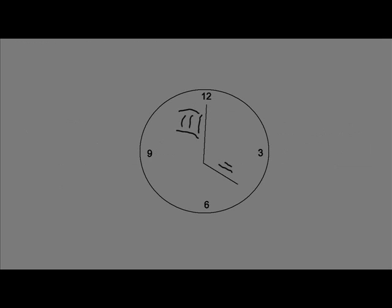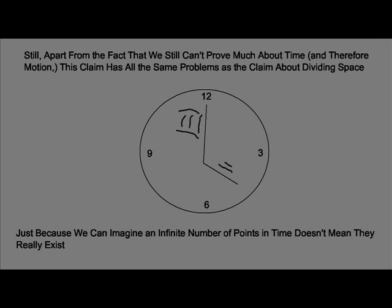Some say that time and motion can have infinite points following from each other, but apart from the fact that there's still relatively little that can be proven about time, and therefore motion in this sense, this claim still has all the same problems as the claim about dividing an area of space. Just because we can imagine an infinite number of points in time or motion doesn't mean that those points are real. The truth is that it's just not logically possible to arrive at an actual infinity through any sort of addition.